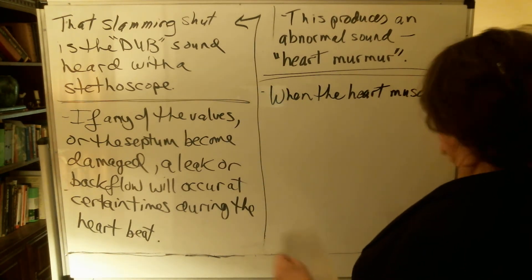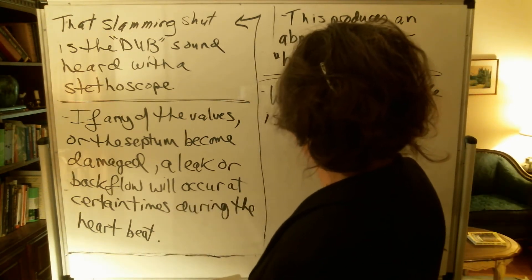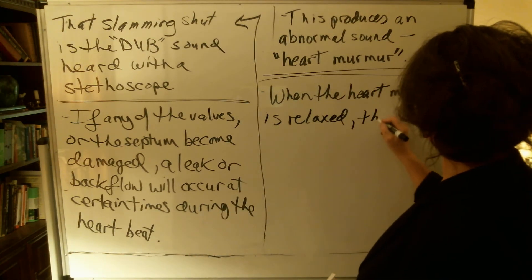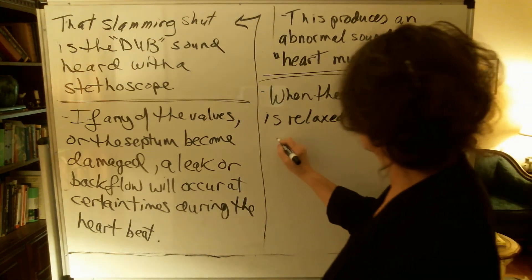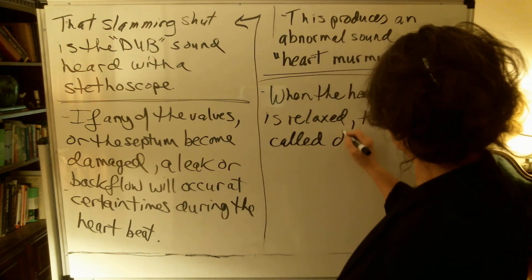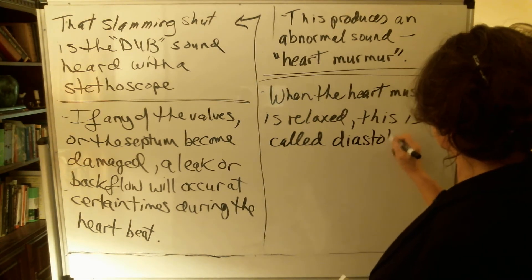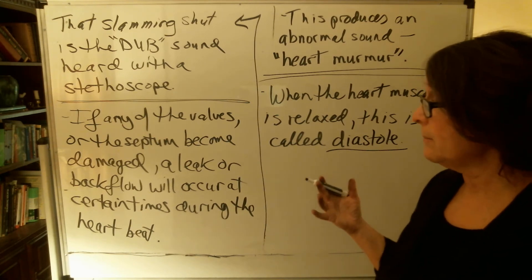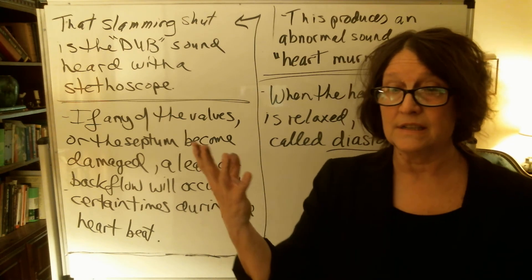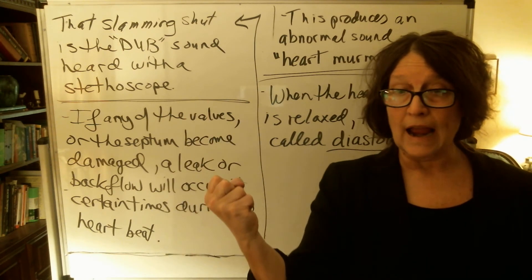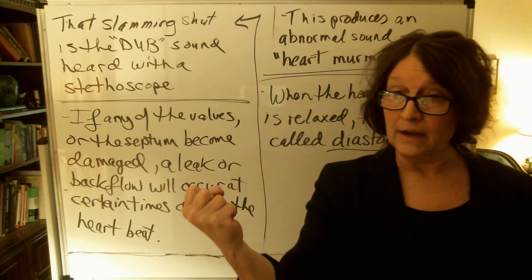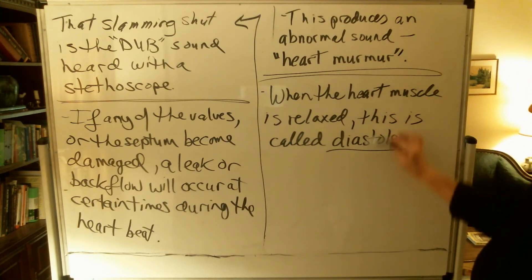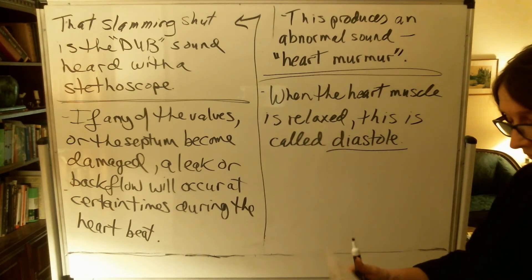When the heart muscle is relaxed, this is called diastole. Now the important thing to keep in mind is that the heart is a very active muscle. It contracts, then rests, then contracts, then rests. It has this period of relaxation after each contraction, called diastole.